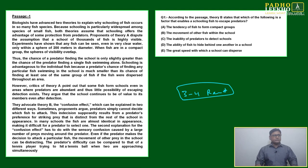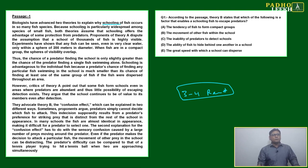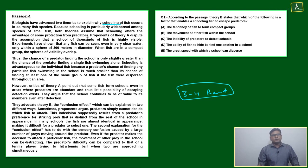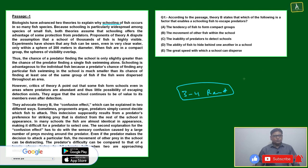We'll try to read about some fish movement. This is part of an experiment or study. Biologists have advanced two theories to explain why schooling of fish occurs in so many fish species. Because schooling is particularly widespread among small fish species, both theories assume that schooling offers the advantage of some protection.